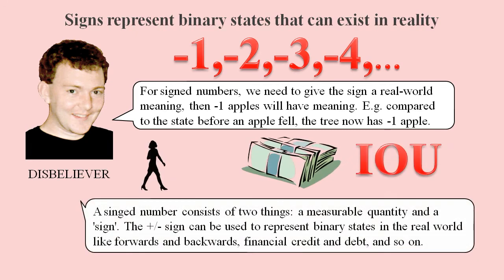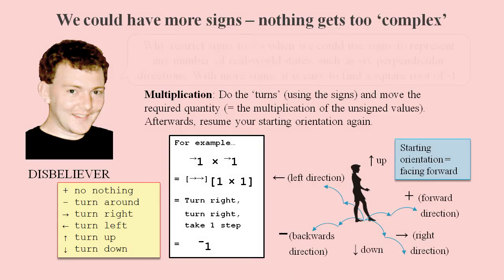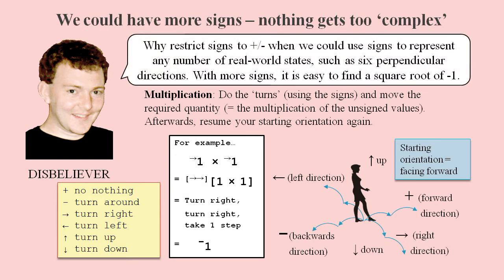A plus or minus sign can be used to represent binary states in the real world, like forwards and backwards, financial credit and debt, and so on. Once we realize that a sign represents a particular real world state, it becomes obvious that we could have more signs to represent more states, such as six perpendicular directions.